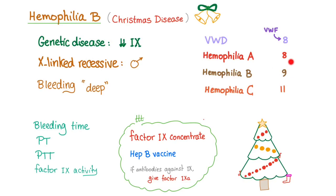Christmas disease is a genetic deficiency of factor 9. It's X-linked recessive, so it's more common in males. The bleeding is deeper than the superficial platelet-related primary hemostasis type of bleeding. This bleeding is deep — like internal bleeding — including bleeding into the joints, known as hemarthrosis, or bleeding into the brain.